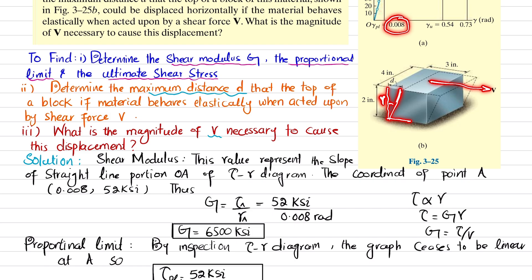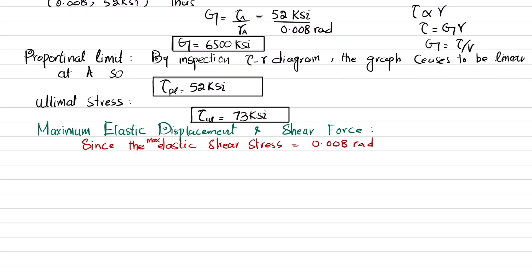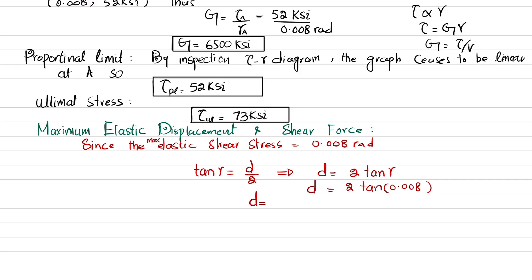Taking the tangent of the shear strain gamma, that equals d divided by 2 — perpendicular over base. So tangent of gamma equals d divided by 2, and therefore d equals 2 times tangent of gamma. Substituting: d equals 2 multiplied by tangent of 0.008 radians. Solving this, the displacement d due to the action of the shear force comes out to be 0.016 inches.